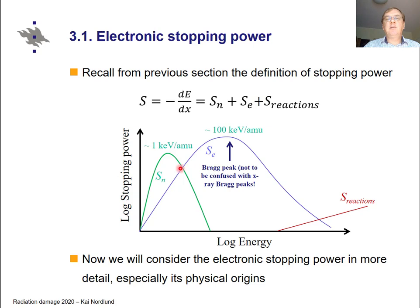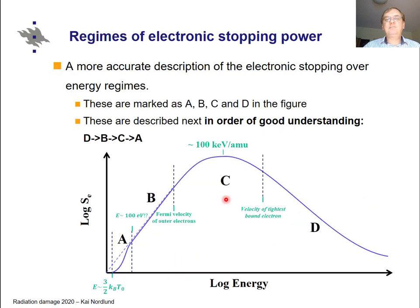As a reminder from the previous section, stopping power can be divided into three parts: the nuclear collision part, the electronic stopping part, and the nuclear reaction part. In this part of the section we will discuss the shape of this electronic stopping curve in detail, focusing on the physical origins of why it has the shape it does. In electronic stopping theory, this peak is usually called the Bragg peak — one should not confuse this with X-ray Bragg peaks, because although it's the same Bragg behind both, the two peaks are completely different in physical origin.